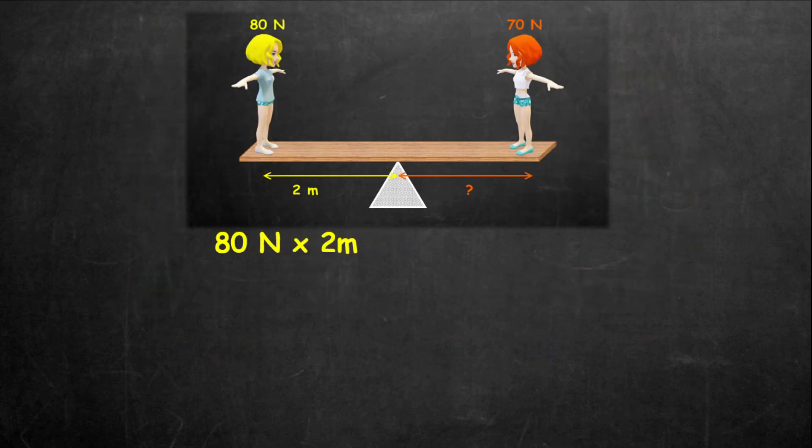So, from this, we can say that Mary's moment is 80 newtons multiplied by 2 meters, which equals to Susie's moment, which is 70 newtons times her unknown distance. From this, we can say 160 newton meters, 80 times 2, is equivalent to 70 newtons times the unknown distance, D.